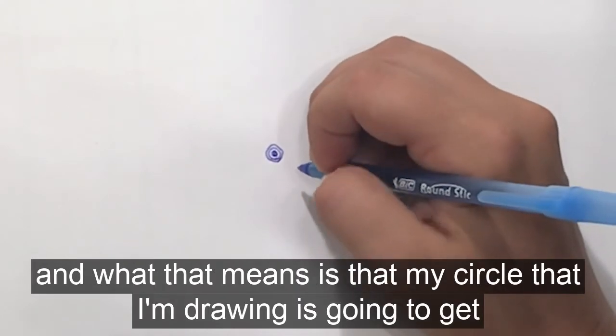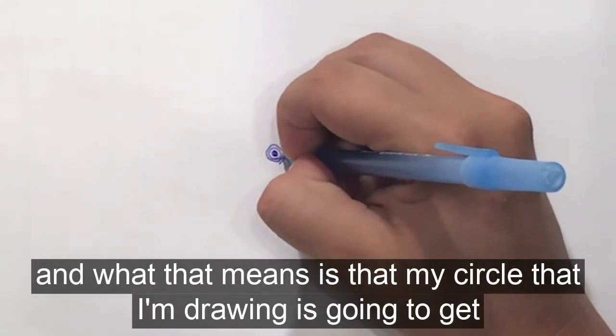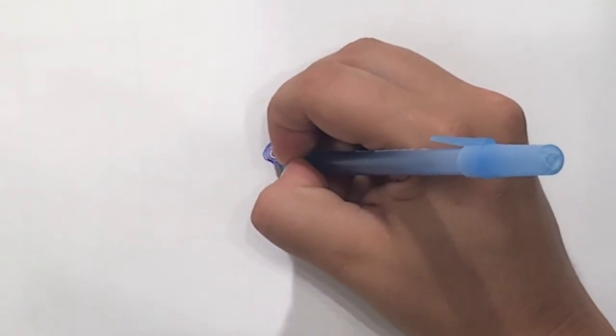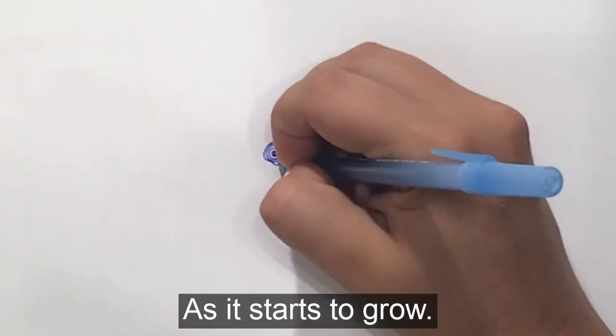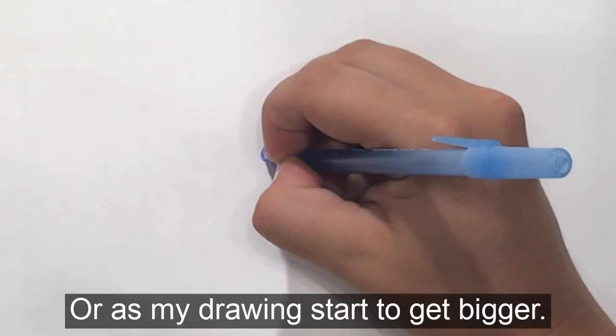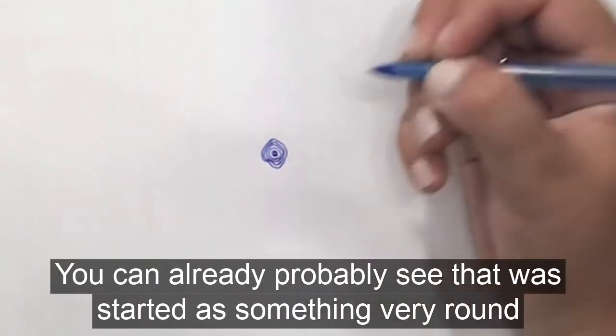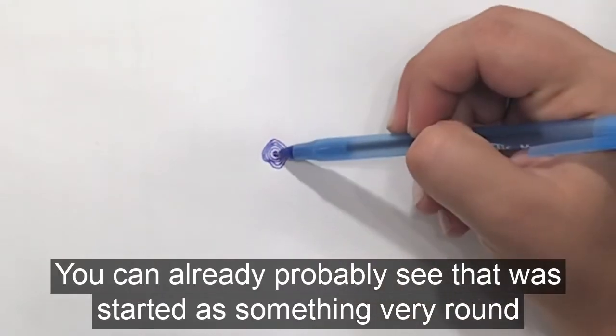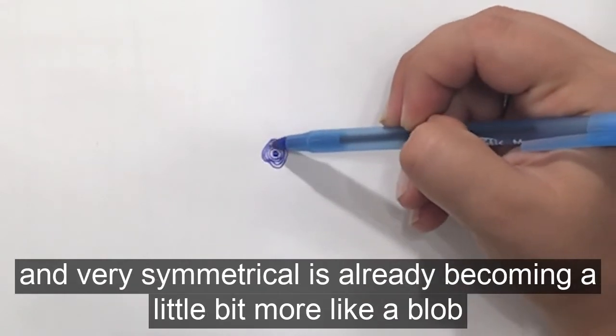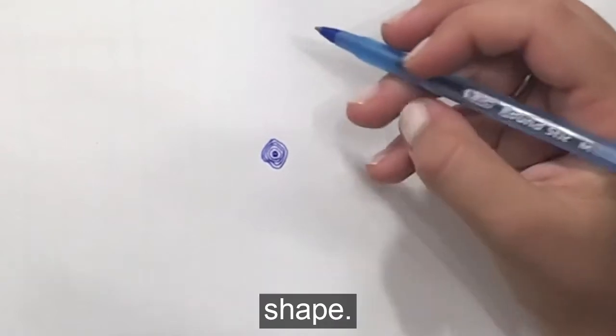And what that means is that my circle is going to get more and more organic as it starts to grow or as my drawing starts to get bigger. You guys can already probably see that what started as something very round and very symmetrical is already becoming a little bit more like a blob shape.